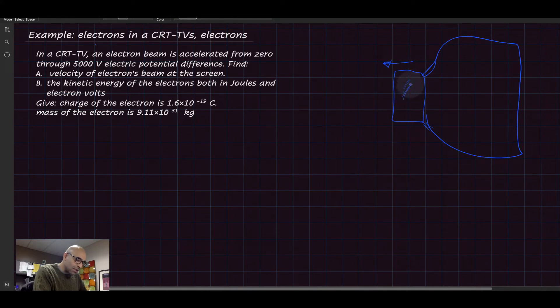This is a cathode ray tube that spits out a beam of electrons. Through electric and magnetic fields, they direct this electron beam and it hits the screen to make the image. This is called rastering.